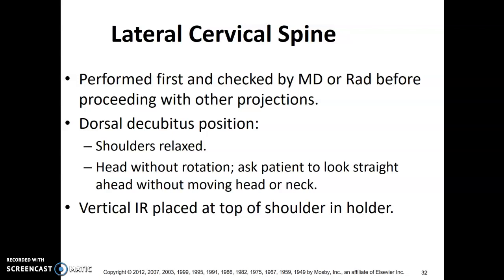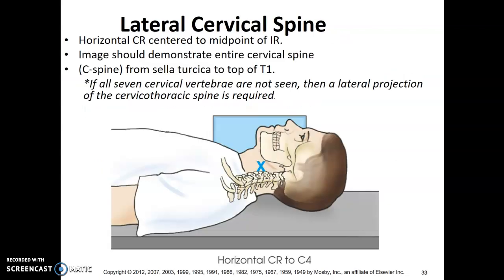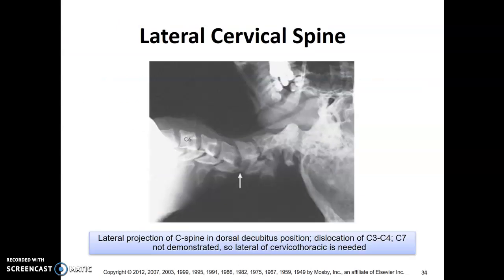Lateral C-spine — cross-table lateral. Obviously the patient won't be sitting up. Same centering to C4; top of the cassette is just above the ear. If you're in the trauma room and they need one — which I would say I have almost never done — you're most likely going to use the wall bucky. If not, you would have a cassette holder or have someone hold the cassette and shoot across. Same SID, same central ray, same image evaluation.